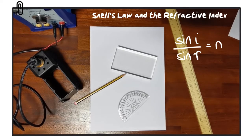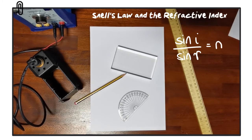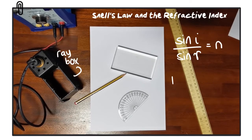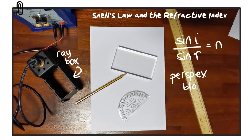To verify this relationship we need to collect data — a range of angles of incidence and the corresponding angles of refraction. To do that we need a ray box, a block made from glass or perspex (this one is perspex), and a protractor to measure the angles.